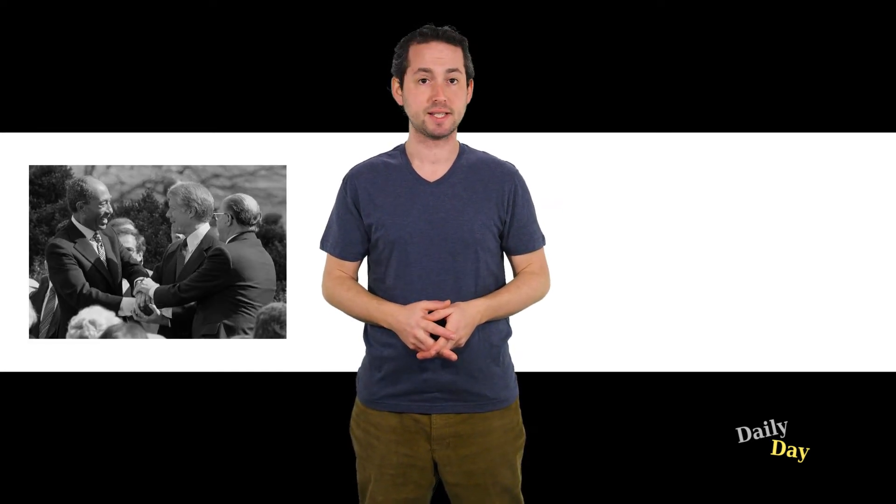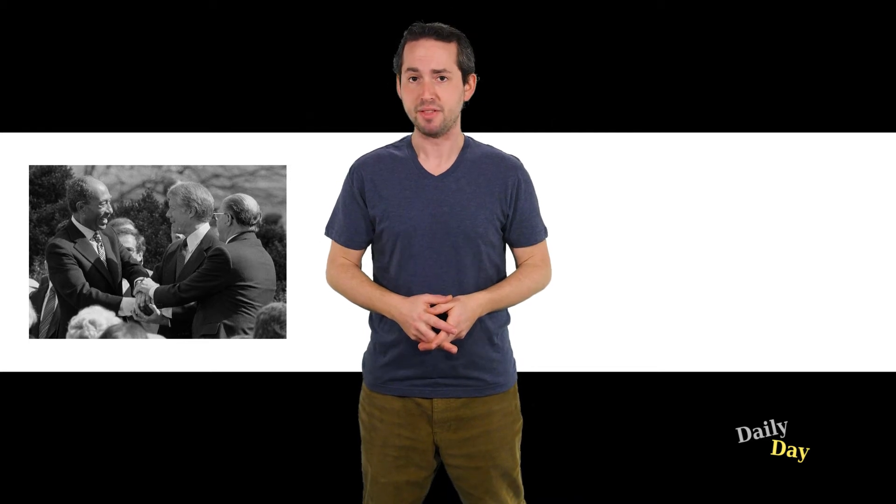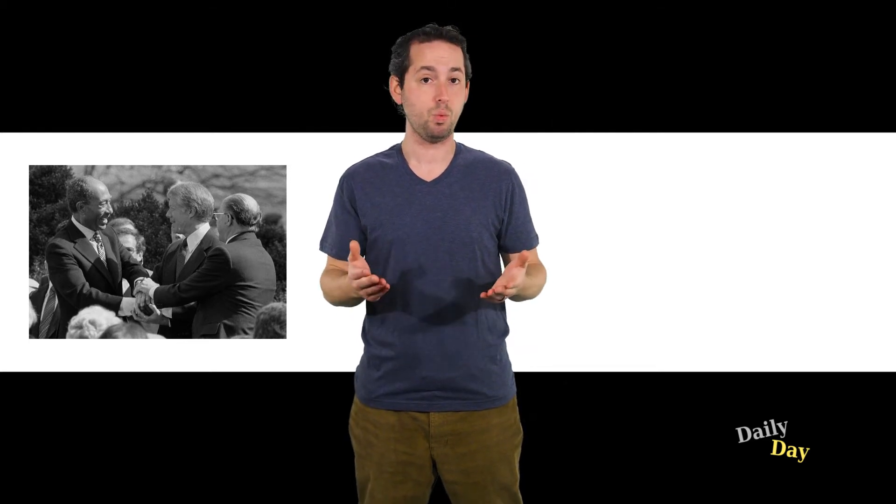This is March 26th. Today in 1979, a historic peace agreement is signed by Israel and Egypt, ending decades of hostilities between the nations. The signing ceremony took place in the White House.